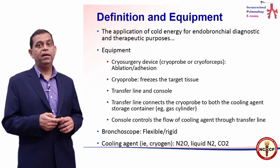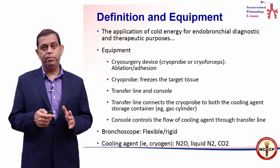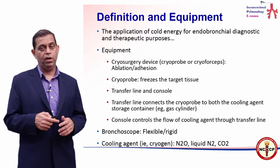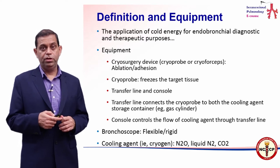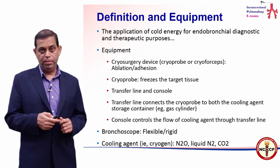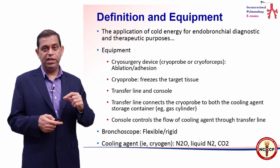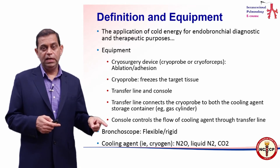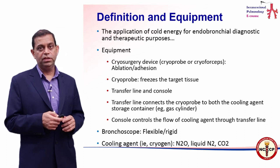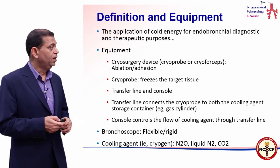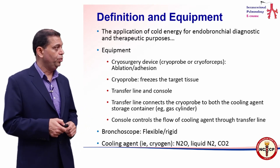Regarding equipment, in bronchology it is pretty similar to forceps, cautery, argon photocoagulation, and laser. You will need the bronchoscope as a conduit, and you will need a catheter which takes the cold energy from the production source all the way to the lesion — that is the transfer line. If you apply that principle to cryosurgery, it becomes much simpler.